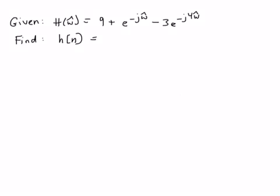Okay, so the problem that we're given here, this is the example we're going to solve, is h of omega hat is 9 plus e to the minus j omega hat minus 3 e to the minus j 4 omega hat. And we're going to try and find the impulse response h of n from that.